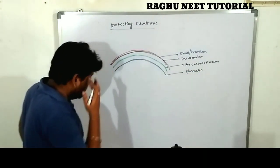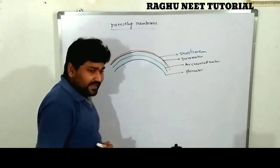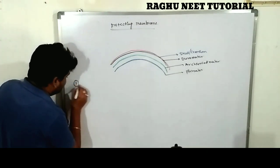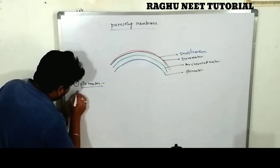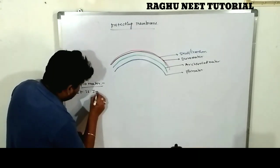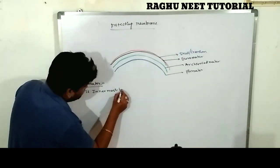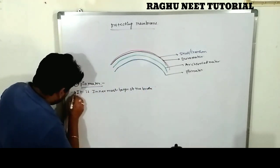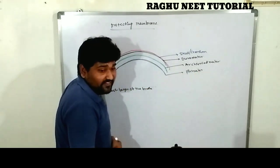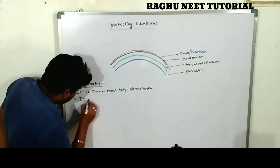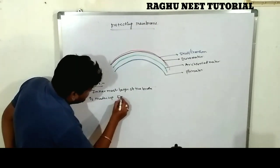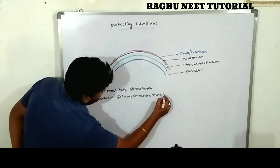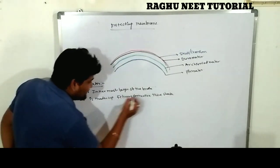The pia mater is the innermost layer of the brain. It is made up of fibrous connective tissue sheath. This is a very important point — the pia mater is composed of fibrous connective tissue sheath.